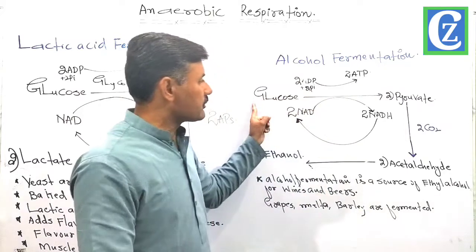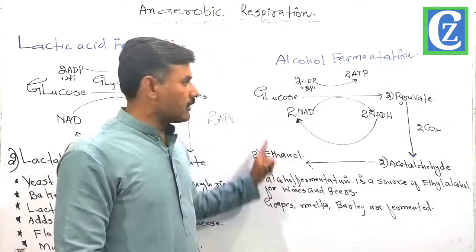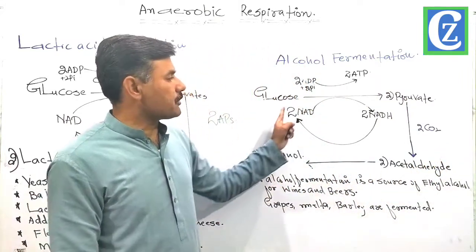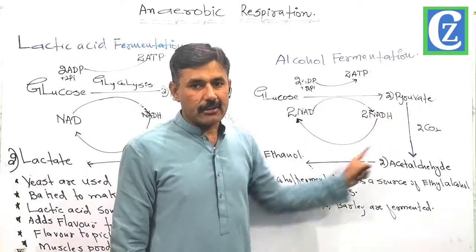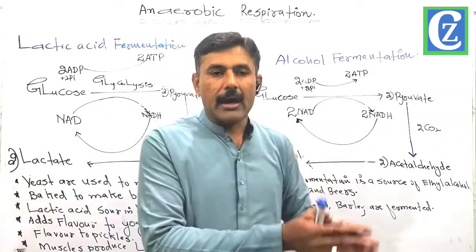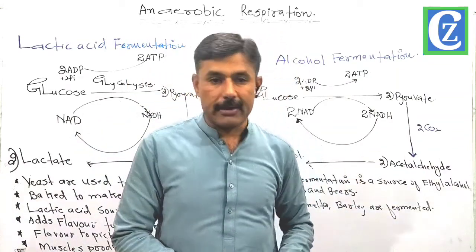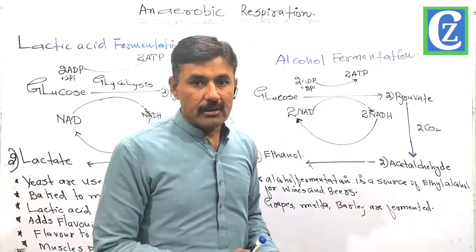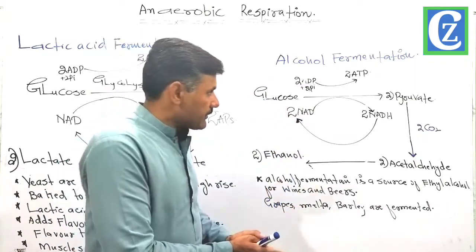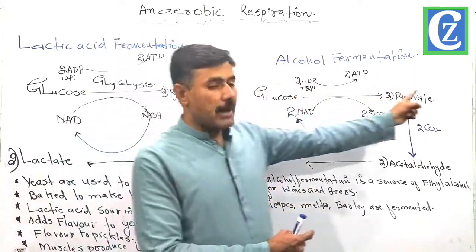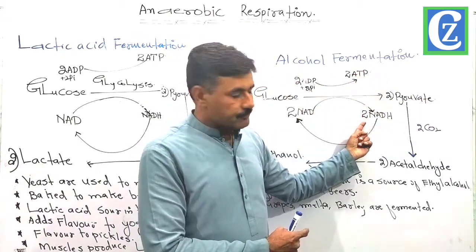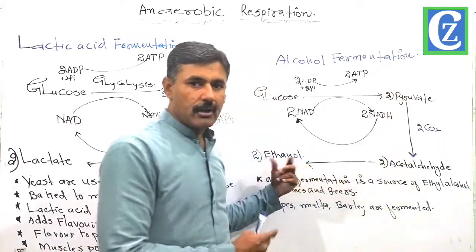But if we start right from glucose and reach ethanol, counting the energy of this whole process: it produces two molecules of NADH that are consumed, but two molecules of ATP produced during glycolysis are the net output of that anaerobic breakdown where glucose is finally converted into ethanol. So glucose converts into pyruvate by glycolysis, yielding two ATP and two NADH. Pyruvates then convert into ethanol by two steps: decarboxylation removes carbon dioxide, and the remaining two-carbon fragments are acetaldehyde.